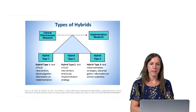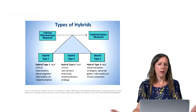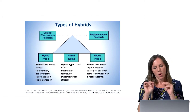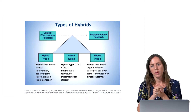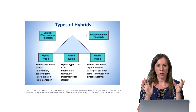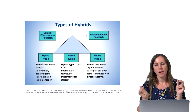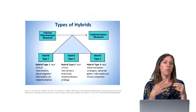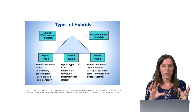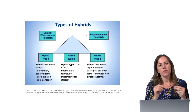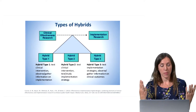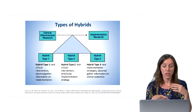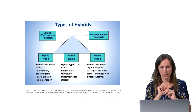Hybrid designs are also increasingly common. This isn't really a design but more about the emphasis — whether you're focusing on testing if an intervention works, or looking at implementation research. We're seeing a lot of studies doing hybrid one trials, where you're testing whether a program works but also embedding implementation questions. So maybe one of your research aims looks at whether it works while also asking: what are the barriers and facilitators at the organizational, community, and individual level that might interfere with implementation in this real-world setting? Or if we were to scale this up across multiple clinics, what contextual factors or health disparity issues might impact whether we can implement it to scale?